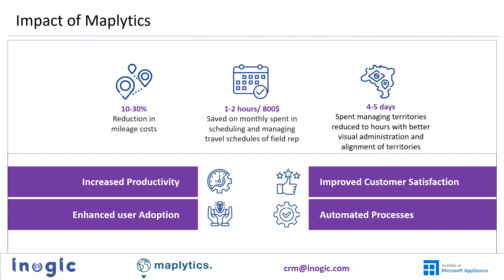Let's see a few examples of the impact of Maplytics on business. Organizations using Maplytics are able to reduce mileage costs by 10 to 30%, which is very valuable given rising fuel prices. Planning field trips, which used to be a tedious process, now saves people one to two hours daily — amounting to about $800 per month. Managers who used to spend four to five hours managing territories now do it in just a few hours with better visualization and alignment.